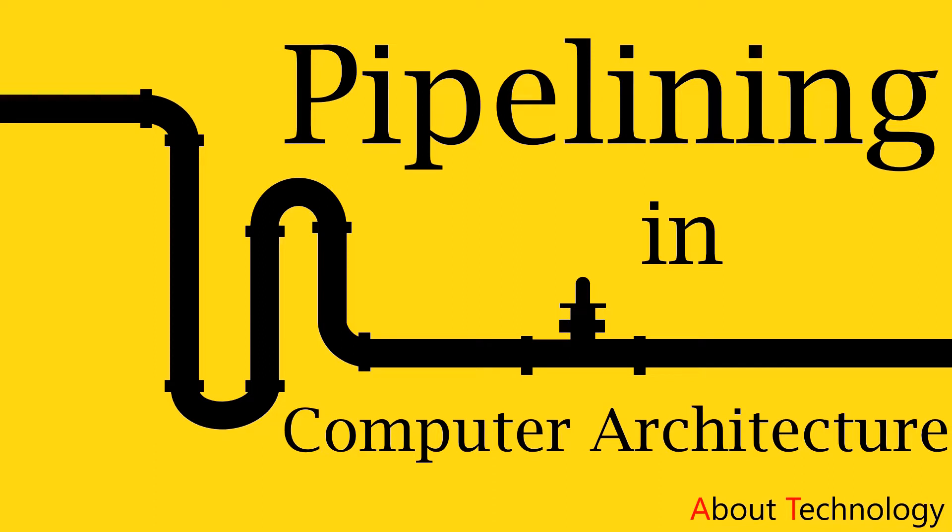Pipelining is a way of organizing the execution of multiple instructions simultaneously. It not only speeds up the execution process but it also improves the throughput of your system. Let us proceed with the video to learn how this is done and what difficulties you may come across.